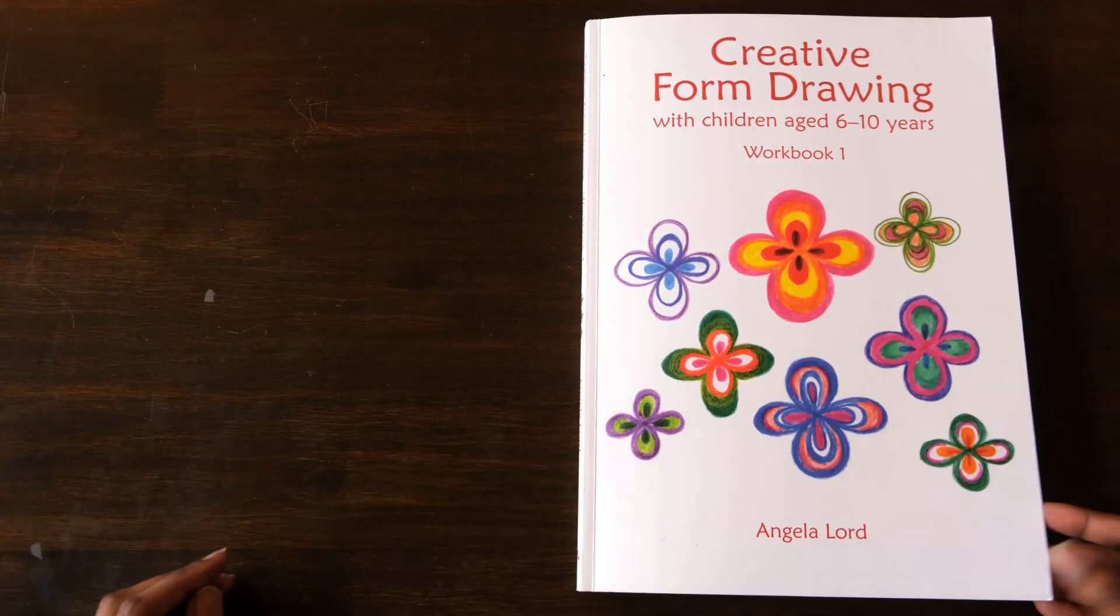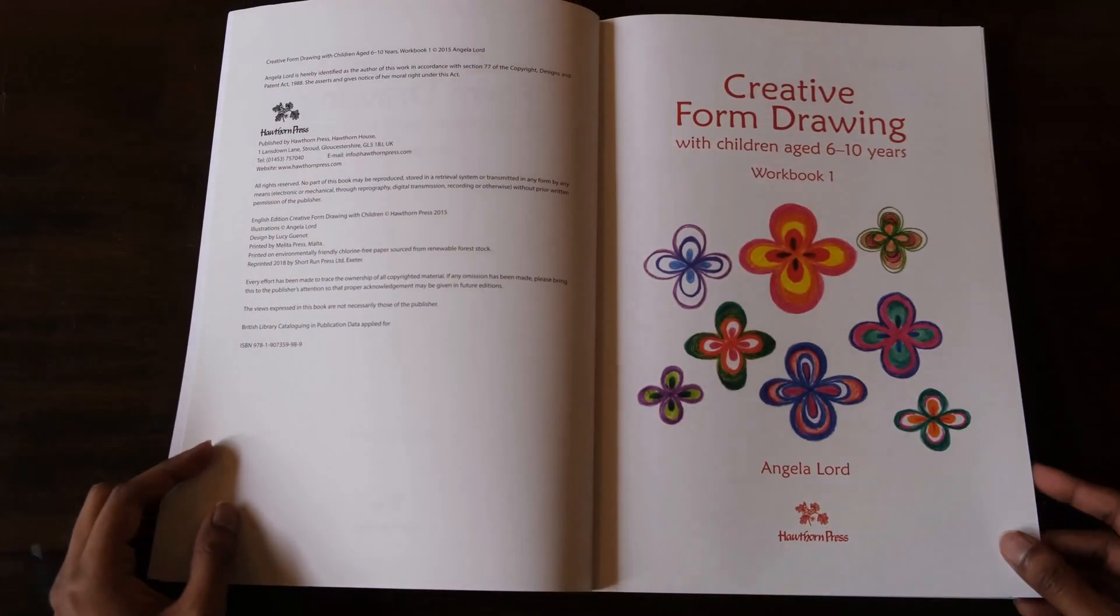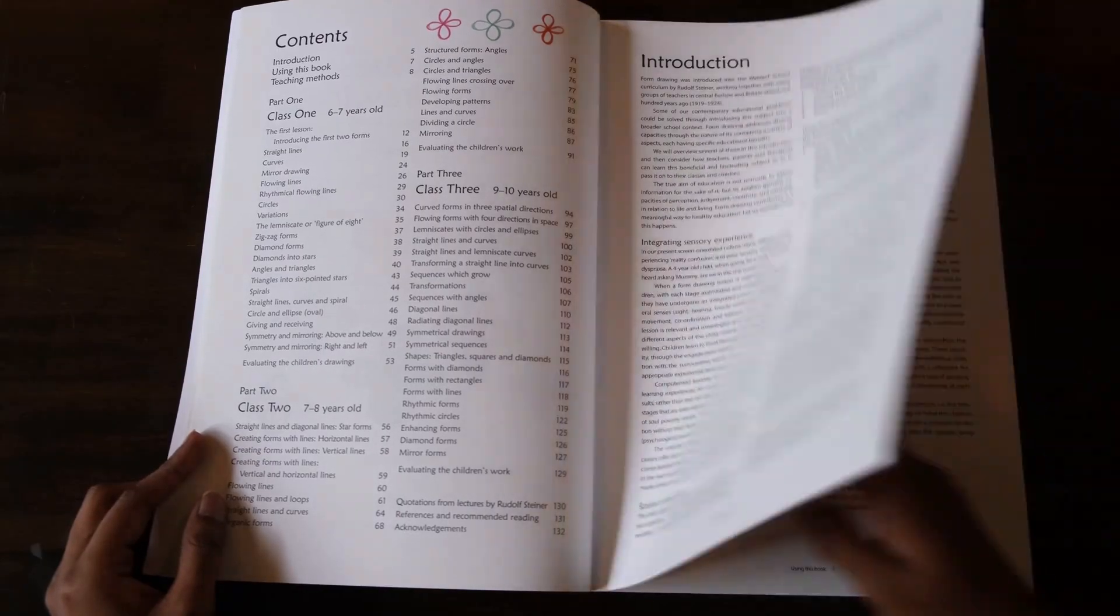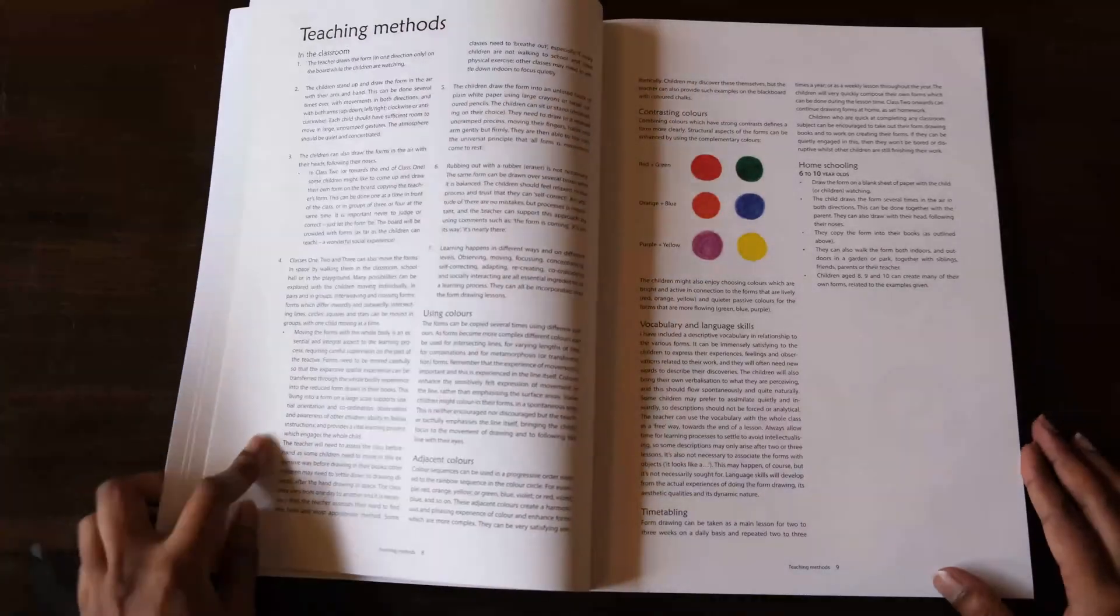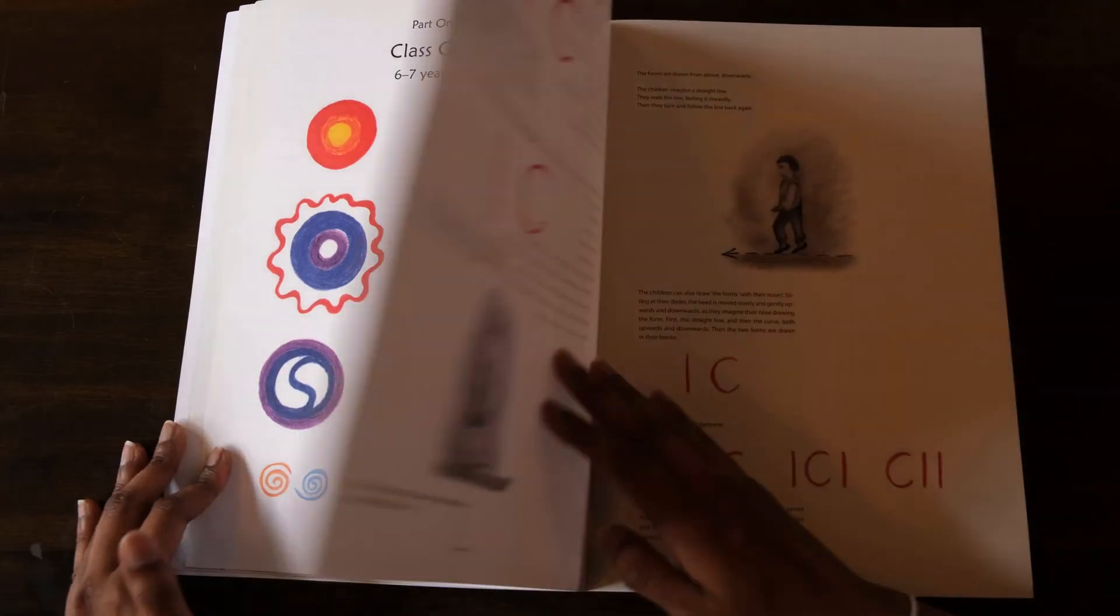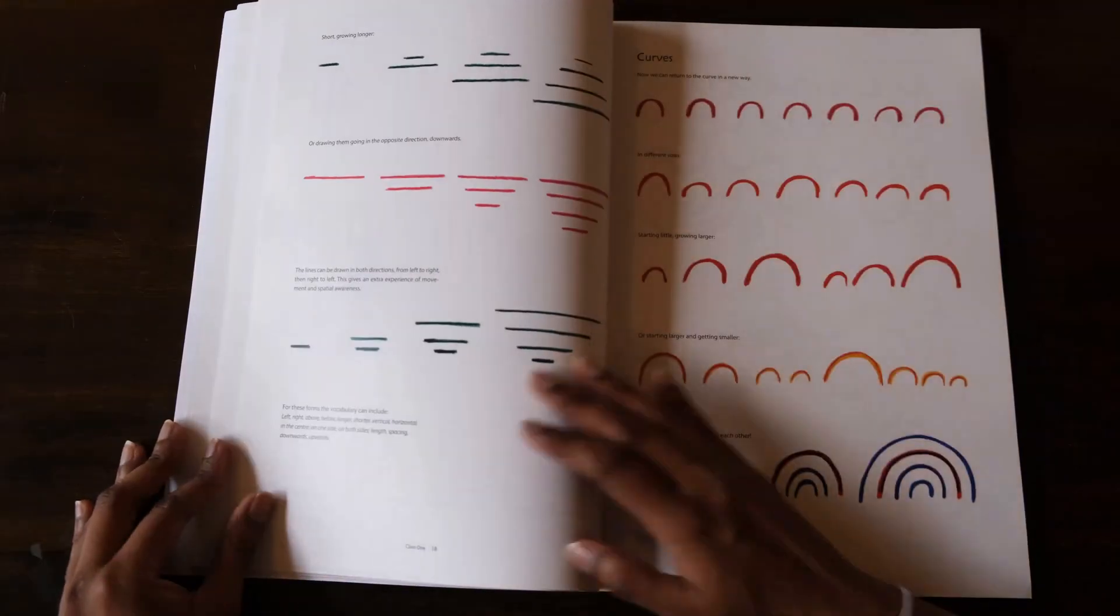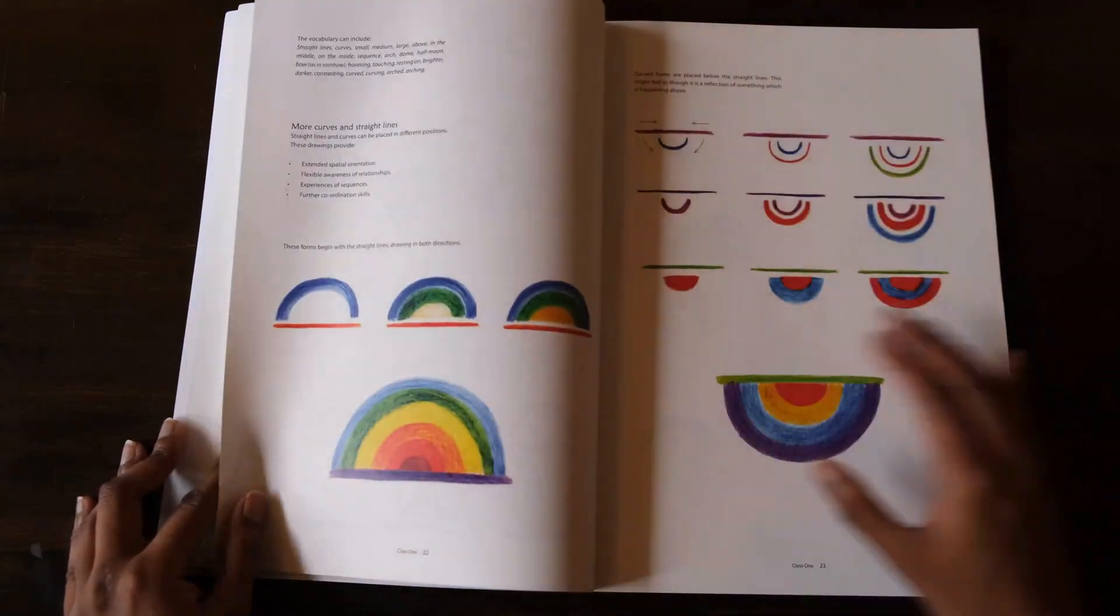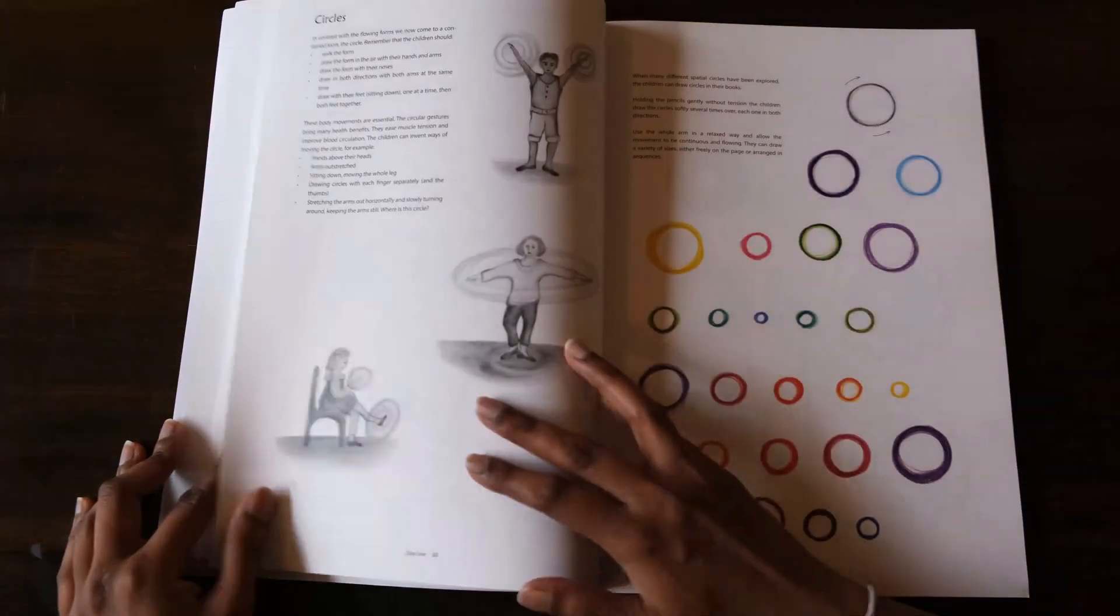This is the Creative Form Drawing Workbook, Volume 1. This is something that is widely used in Steiner and Waldorf education. I bought this book ages ago and we have been slowly progressing through it and really enjoying it. The exercises in this book are fantastic for developing hand-eye coordination, spatial awareness, observation and concentration skills, drawing skills, as well as working on laying down the foundational skills for handwriting.